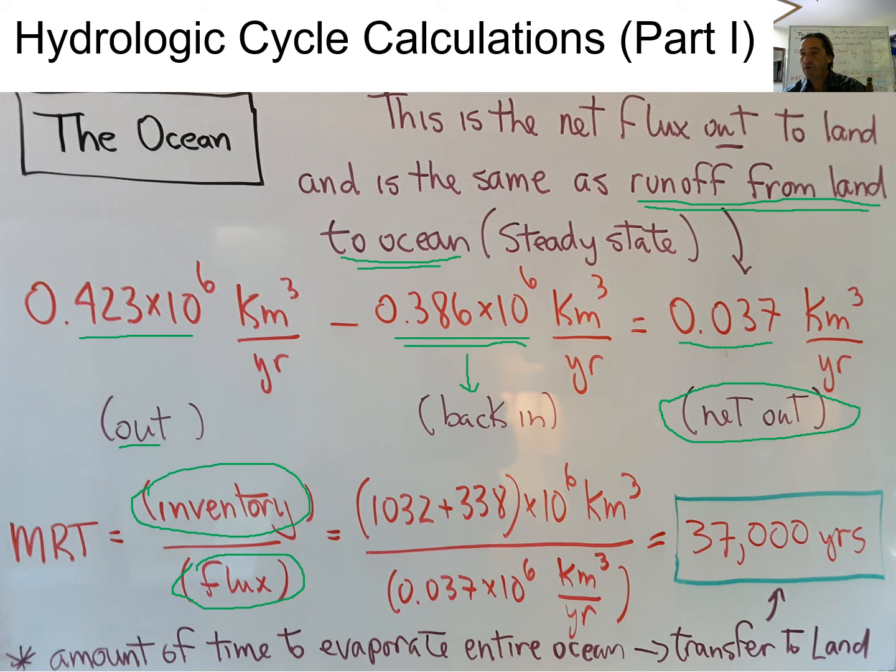In terms of my inventory, I add the amount in kilometers cubed times 10 to the 6. I add the amounts from the surface ocean and the deep ocean together, and that is my total inventory in the ocean. From that, what I find is that the mean residence time that a water molecule spends in the ocean is actually 37,000 years. That's the length of time on average that a water molecule spends in the ocean.